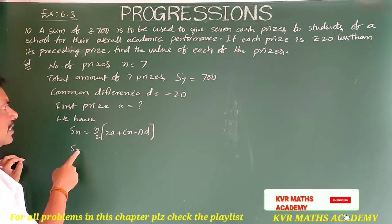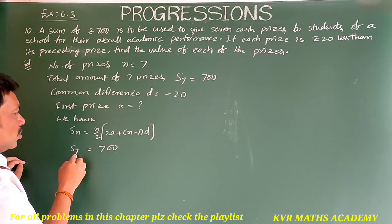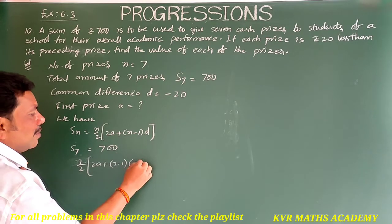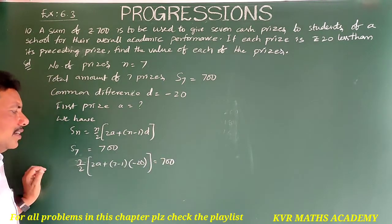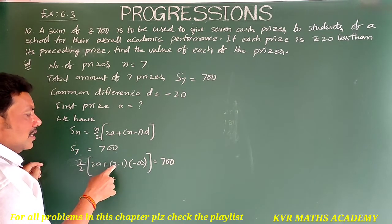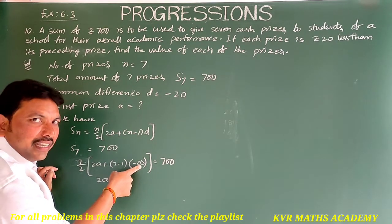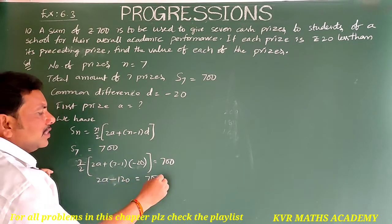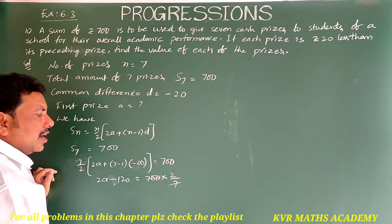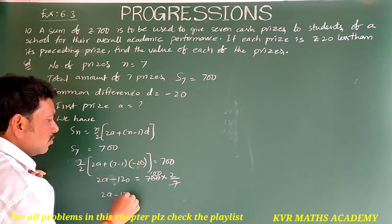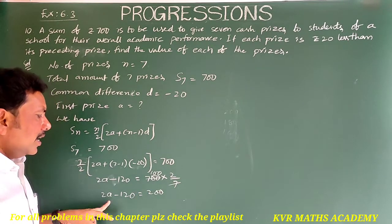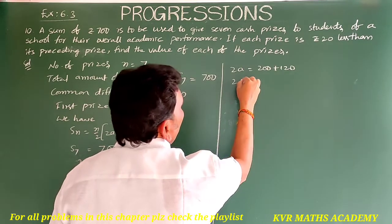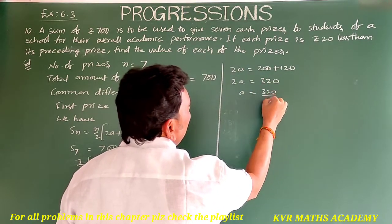Here S7 = 700, so 700 = 7/2 into (2A + (7−1) × (−20)), which gives 700 = 7/2 into (2A − 120). Transferring 7/2 to the other side: 2A − 120 = 200. So 2A = 200 + 120 = 320, giving A = 320/2 = 160. So A is equal to Rs. 160.